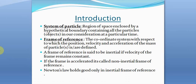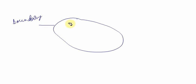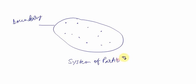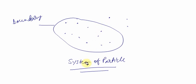Now we will define system of particles. A system of particles is a region of space enclosed by a hypothetical boundary containing all the particles or objects under consideration at a particular time. All the particles inside this region constitute the system of particles. These particles can be of the same mass or different mass — whatever be the case. Particles outside this boundary are not part of the system.